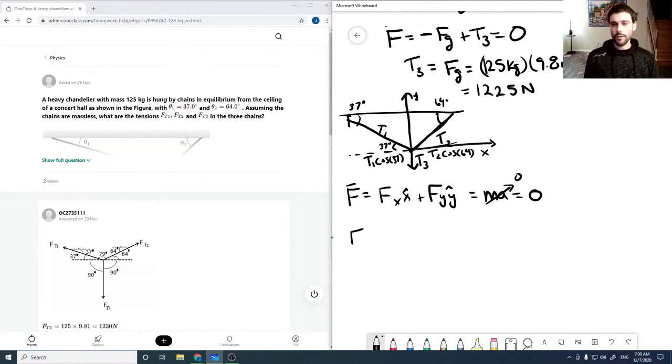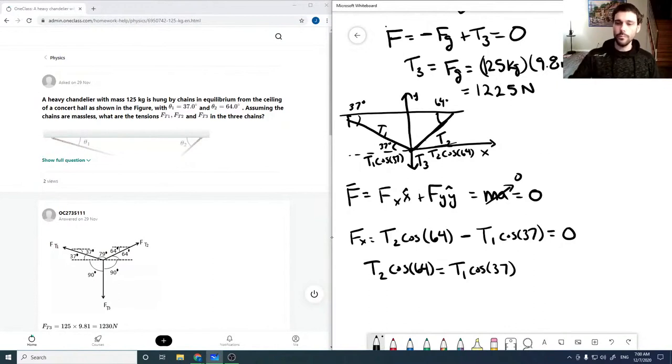So then our Fx is T2 cosine of 64 minus, because it's in the negative direction, T1 cosine of 37, and that together has to equal our x-acceleration, which is 0. And so we have that T2 cosine of 64 is equal to T1 cosine of 37.